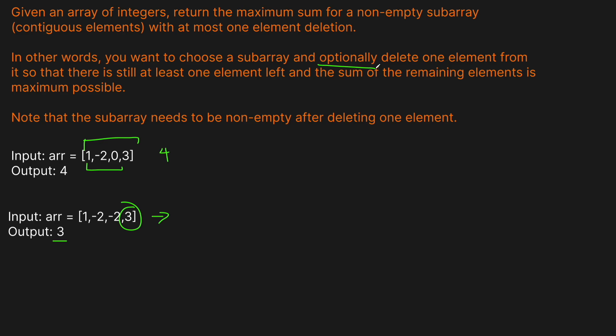The approach is similar to solving the maximum subarray problem: we keep track of the sum and ask at certain conditions whether it makes sense to add more elements or start over. We'll go straight to the code editor — this is a fast problem, about 15 lines of code, no need to go through examples line by line. See you in the code editor in three, two, one.